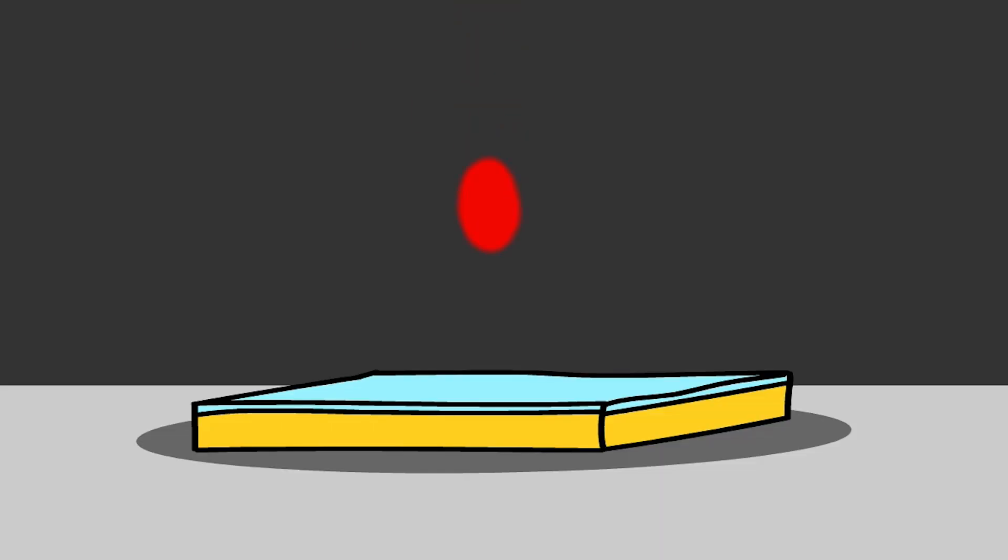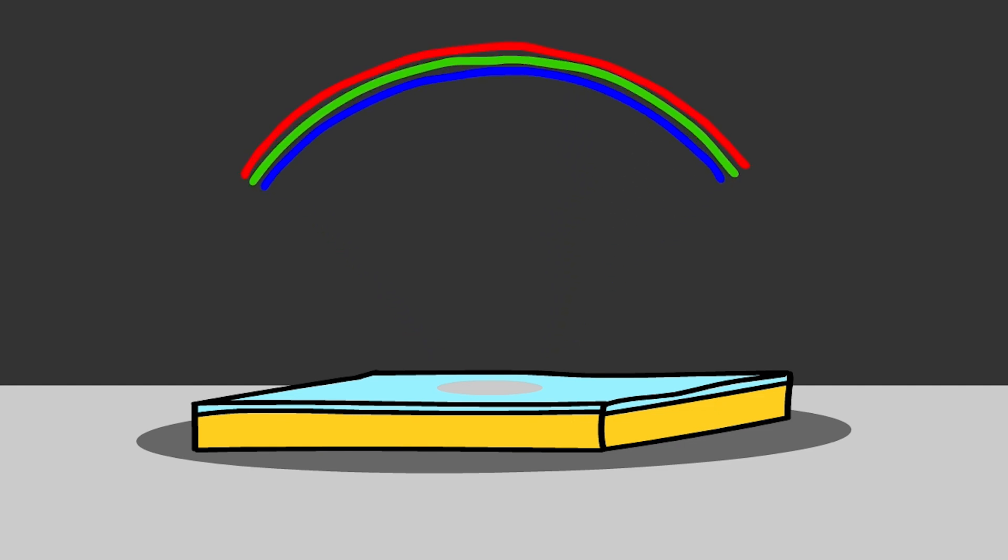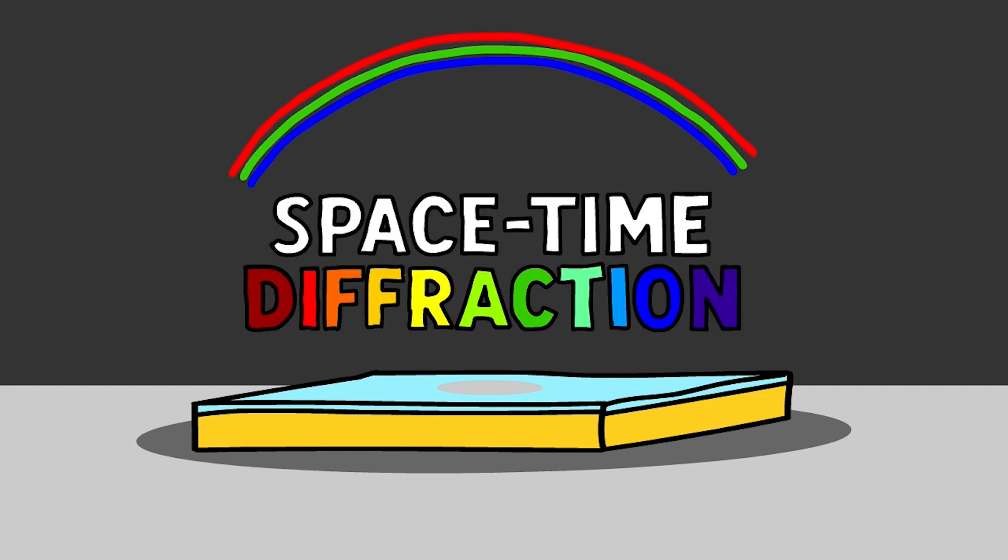By focusing a high-energy laser pulse, we can heat up a really small region of our sample, creating a tiny temporary mirror which we can then use to scatter a second pulse into a range of angles and colors in a process called space-time diffraction.